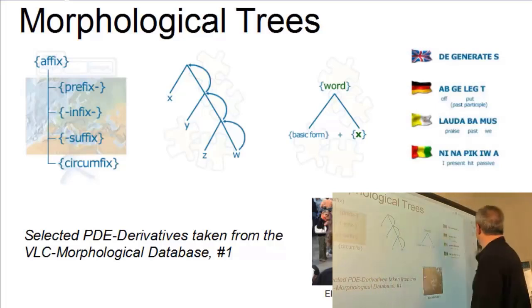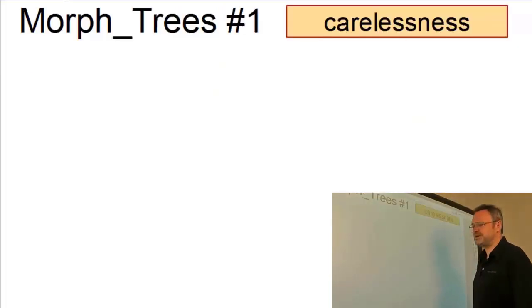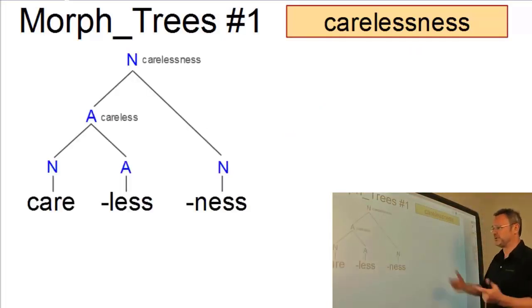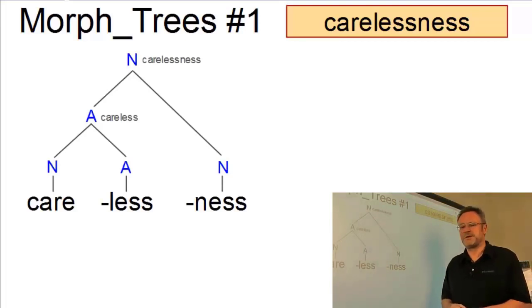I will analyze the present-day English derivative carelessness. And this will be the result: a morphological tree. But how do we arrive at such a structure? Well, let's build this morphological tree step by step.